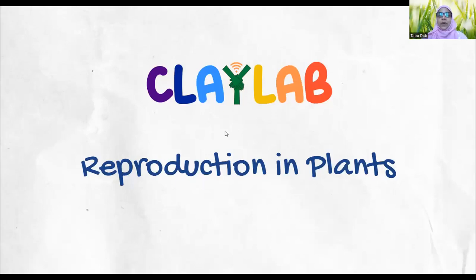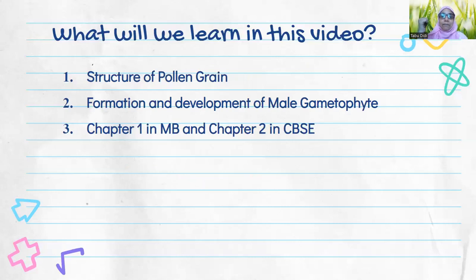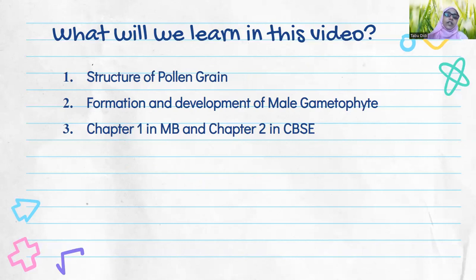Hello everyone, I hope everyone is doing good. Welcome to this video of the second chapter: reproduction in plants. Up until now we have covered asexual reproduction, its types, and then the structure of the flower — the male reproductive part and the female reproductive part. We have discussed the male reproductive part, and in the previous video we discussed the formation of pollen grains, that is microsporogenesis.